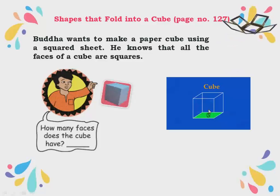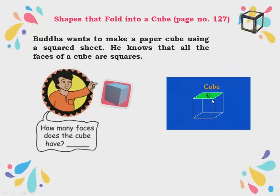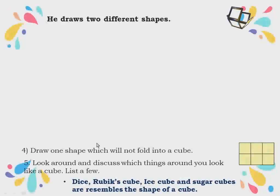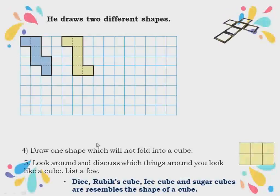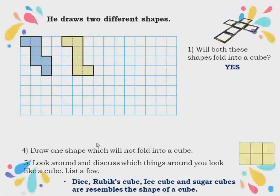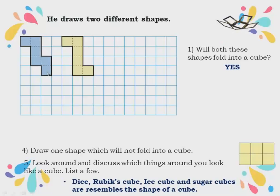The bottom is the fifth face and the top face is the sixth face. So a cube has six faces totally. He draws two different shapes and asks: will both these shapes fold into a cube? Yes, they will definitely fold into a cube because there are six sides. If six sides are there it will definitely fold into a cube.